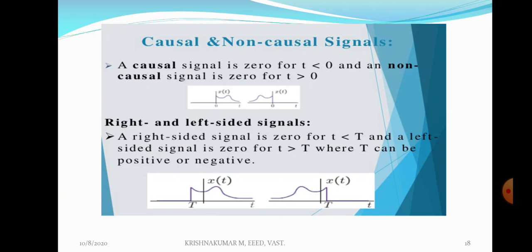x(t) is equal to 0 when t less than 0. When t is negative, there is no x(t). The signal doesn't exist for negative values of t. The signal exists only on the positive values of t. Therefore, that signal is known as a right-handed signal, or causal signal.